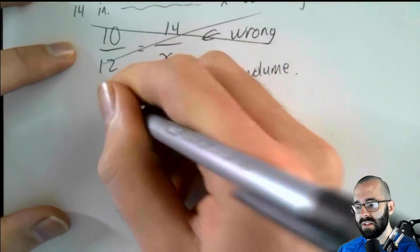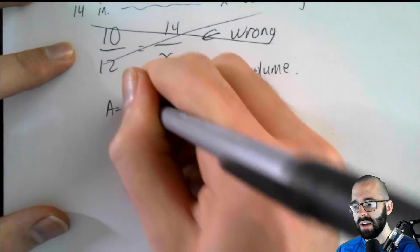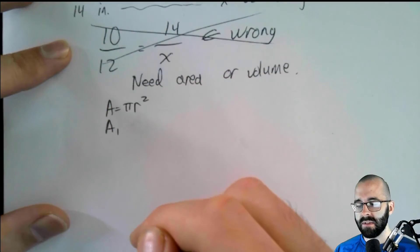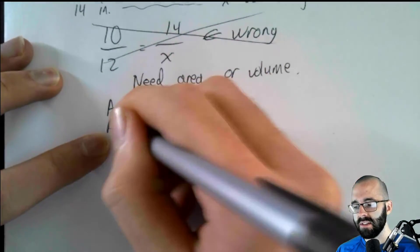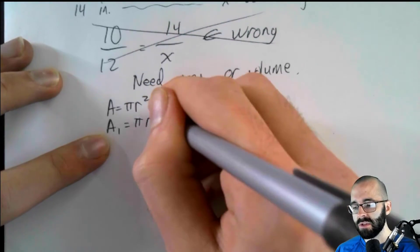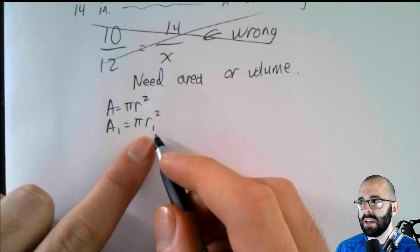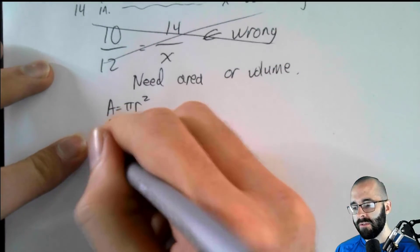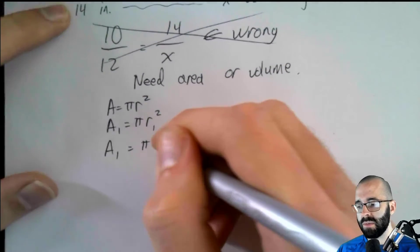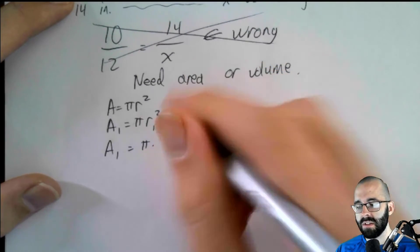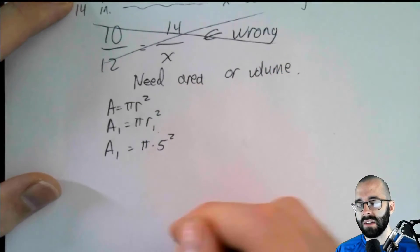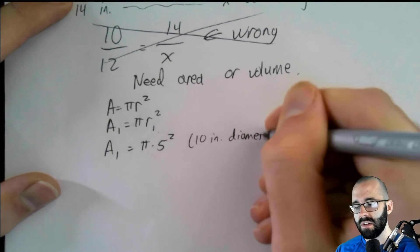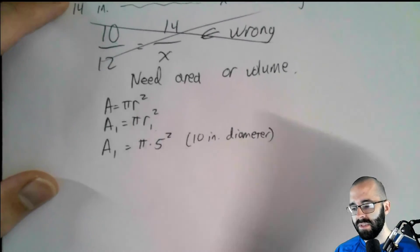So we consult our formula sheet and say the area of a circle is pi times a radius squared. So let's call our first pizza. First pizza has area A1. That's pi times the first radius squared. We're just using subscripts here to denote which pizza is which. So the first pizza has area pi times, it was 10 inch diameter, so 5 inch radius, right? 10 inch diameter.